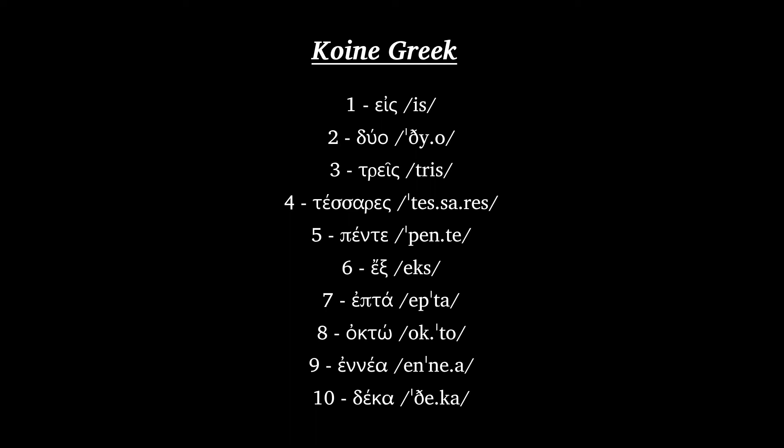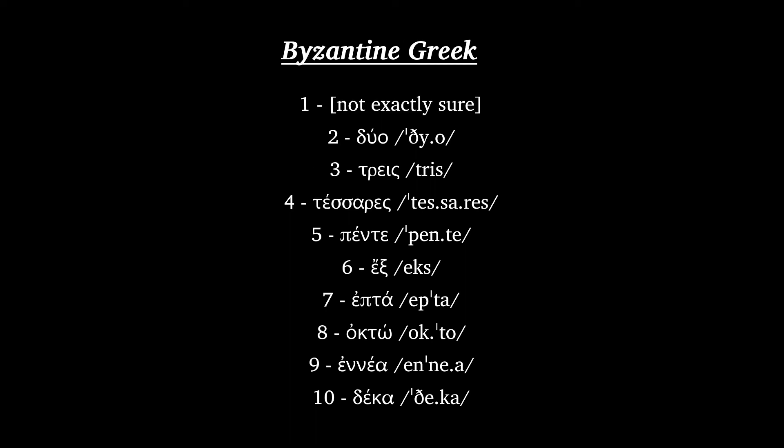Byzantine Greek: Dio, Tris, Tessares, Pente, Hex, Hepta, Okto, Enea, Deka.